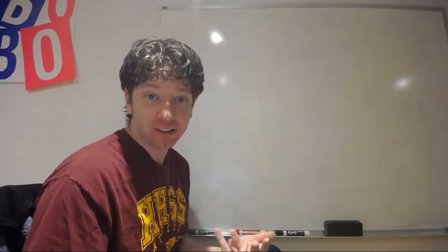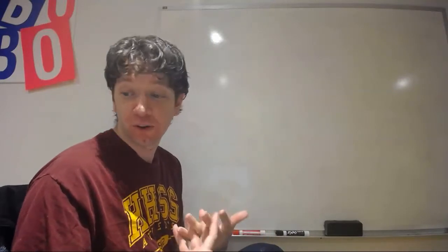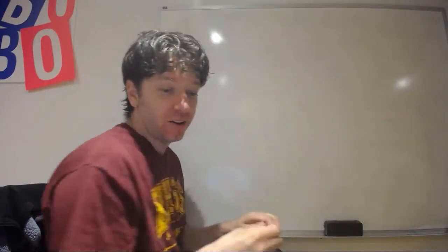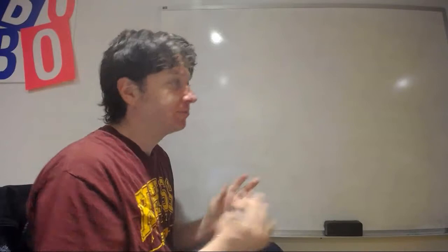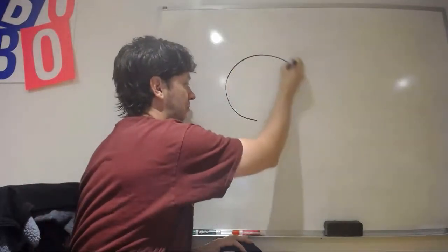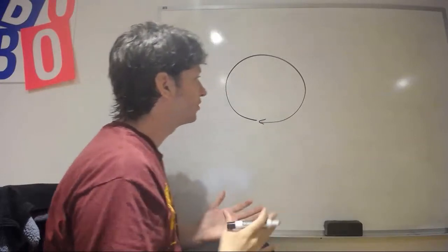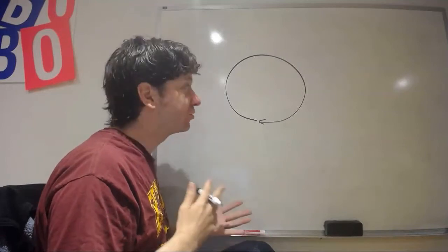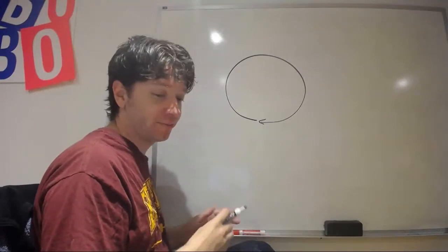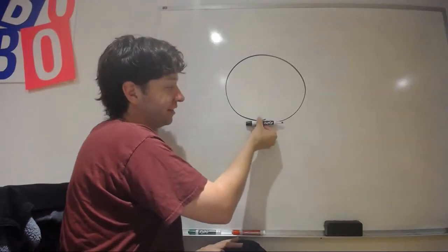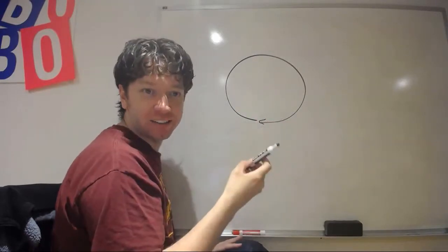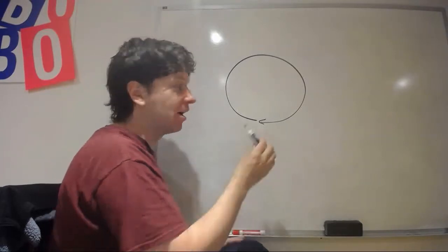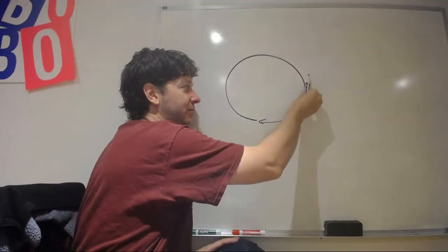Today we're going to analyze that acceleration and those forces. Tomorrow we'll talk more about the forces; today we focus on the acceleration. Centripetal acceleration — when we're going in a circle — is always center-seeking, meaning the direction is always inwards towards the center. In our cases, we're only going to keep the magnitude of velocity the same; we're not going to have a changing speed, but the direction is obviously changing.